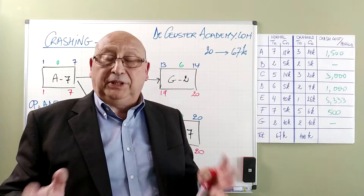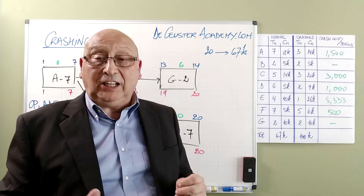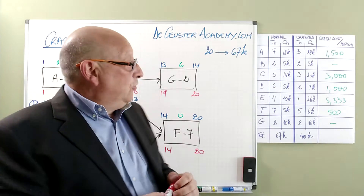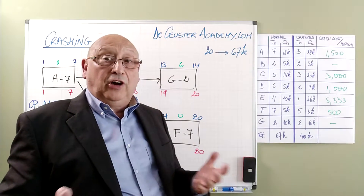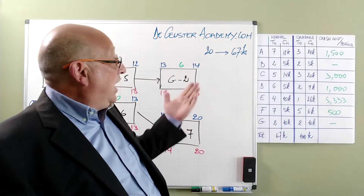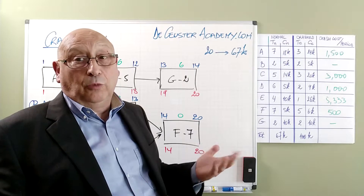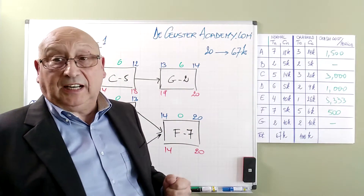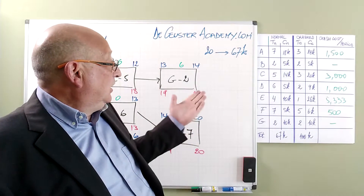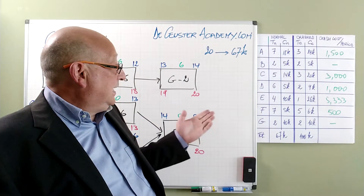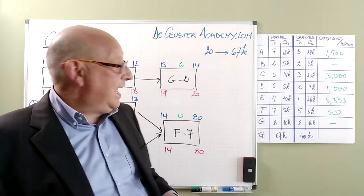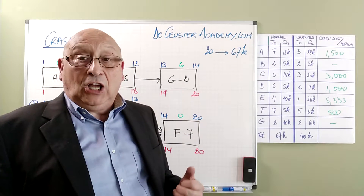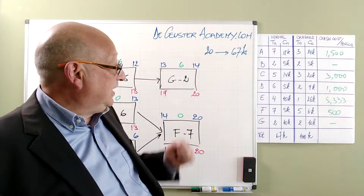In the second part of the presentations related to crashing, we are going to apply crashing to the network schedule. In the table you can see the result of our crashing calculations. Activity A has a crash cost per period of 1.5K. B and G are not crashable. C has a crash cost of 3K, D of 1K, E of 5.3K, and F of 0.5K. We can see that F is the cheapest activity to crash.